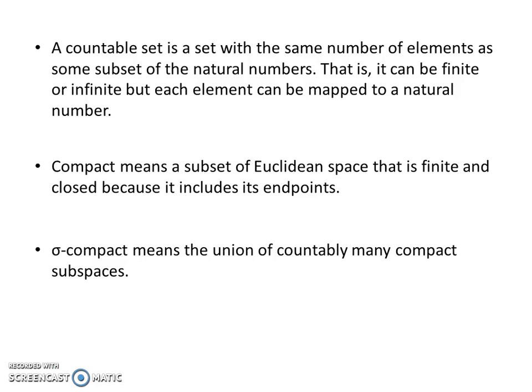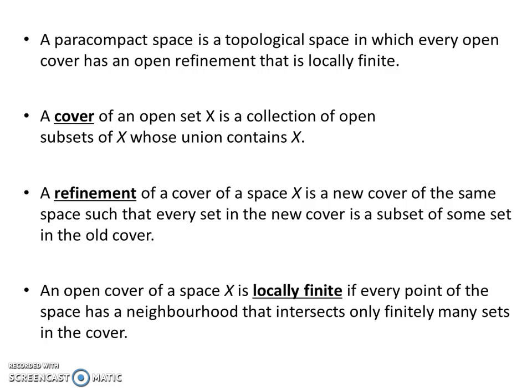A countable set is a set with the same number of elements as some subset of natural numbers — it can be finite or infinite, but each element can be mapped to a natural number so you can count the things in it. Compact means a subset of Euclidean space that is finite and closed because it includes the endpoints. Sigma-compact means a union of countably many compact subspaces. A paracompact space is a topological space in which every open cover has an open refinement that is locally finite.